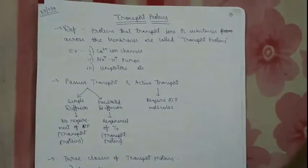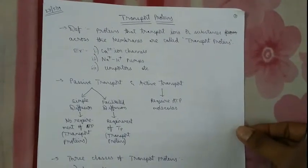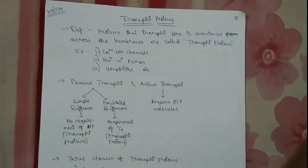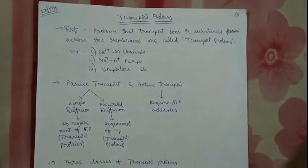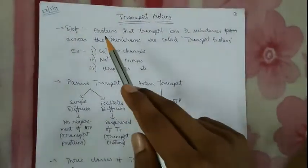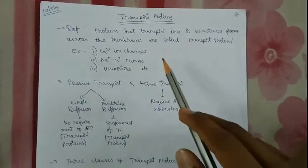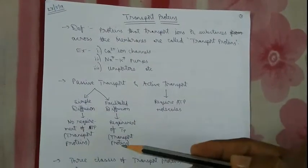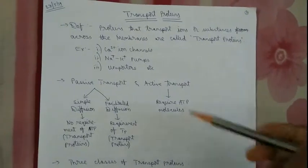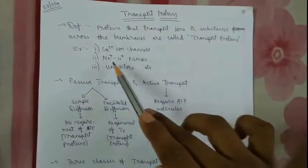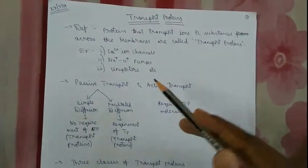Hello friends, welcome to About Studies. Today our topic of discussion is transport proteins. We will learn what are transport proteins, what are the types of transport proteins, and what is their mechanism. Transport proteins are proteins that transport ions or substances across the membrane — they mediate the transportation of ions, water molecules, glycerin molecules, amino acids, etc. Examples include calcium ion channels, sodium-potassium pumps, and uniporters.